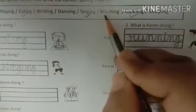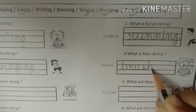Question number 4. What is Ram doing? Ram is, look at the picture, brushing. So write the spelling of brushing: B-R-U-S-H-I-N-G, brushing.